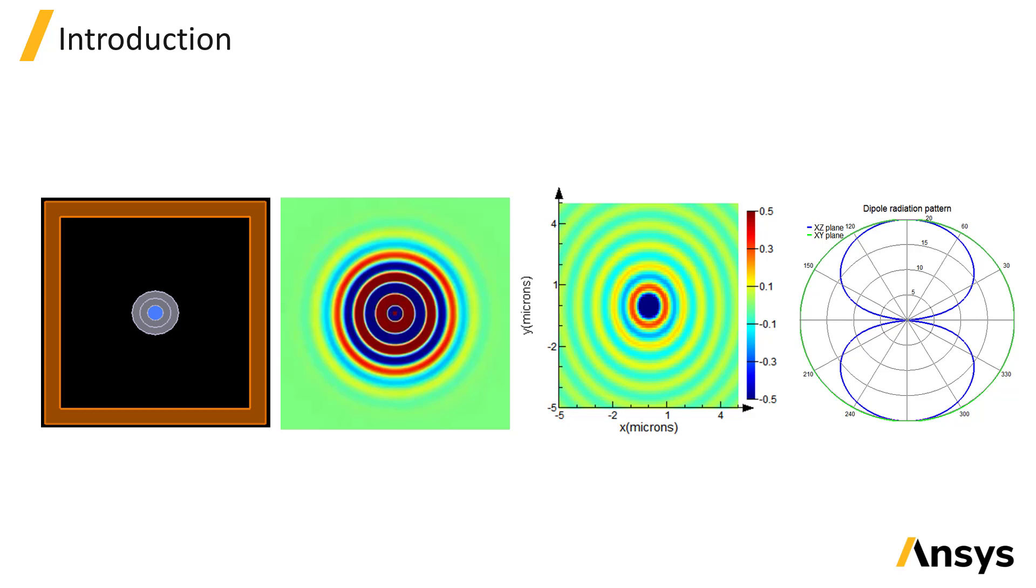The dipole source is a point source which emits a dipole radiation pattern. There are two types of dipole sources available, electric and magnetic.